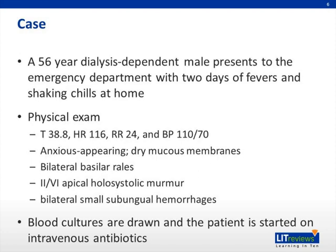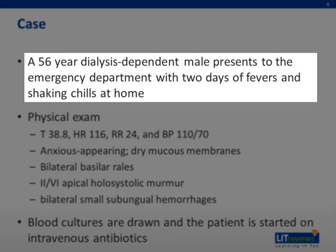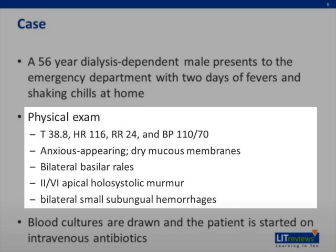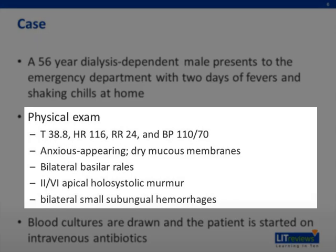A case. A 56-year-old male with end-stage renal disease on hemodialysis presents to the emergency department with two days of fevers and shaking chills at home. Vital signs are temperature 38.8, heart rate 116, respiratory rate 24, and blood pressure 110 over 70. Physical exam reveals an anxious-appearing male with dry mucous membranes, a 2 out of 6 holosystolic murmur at the apex, rales, and small subungual hemorrhages.